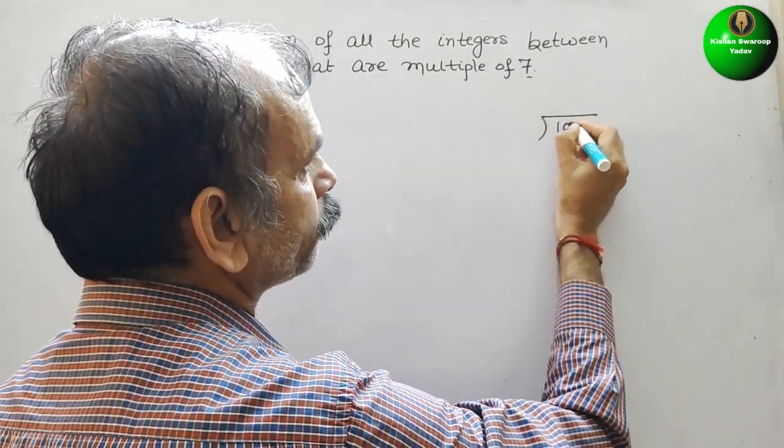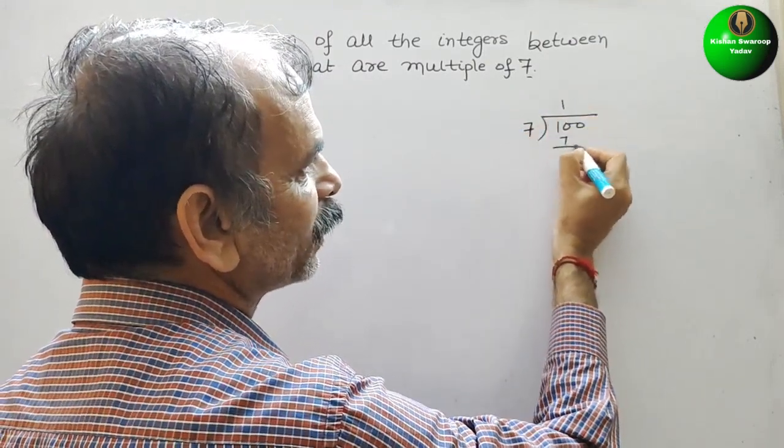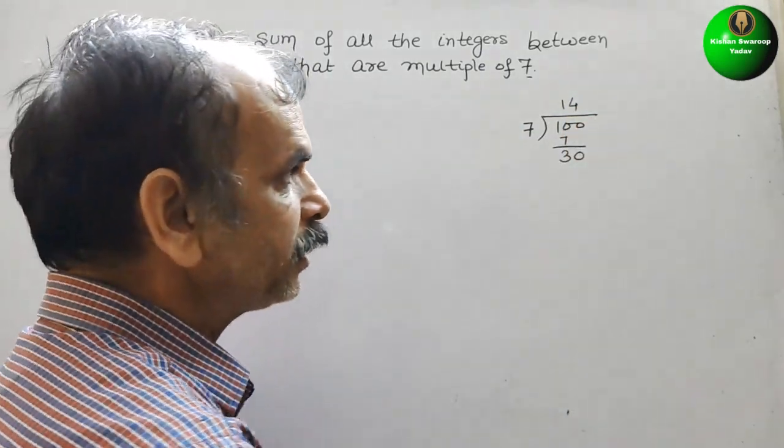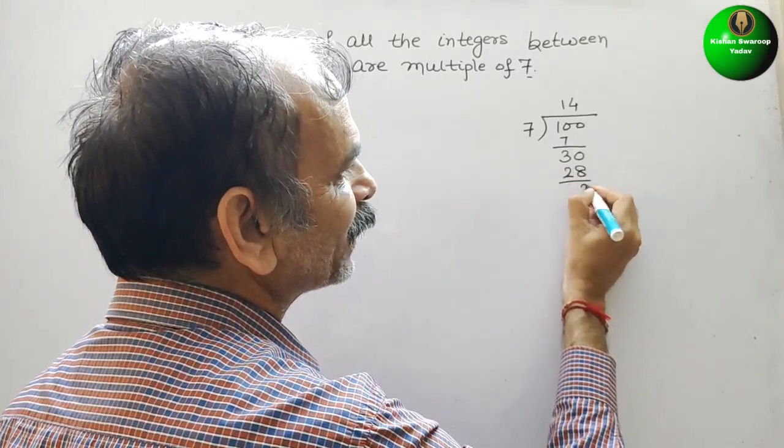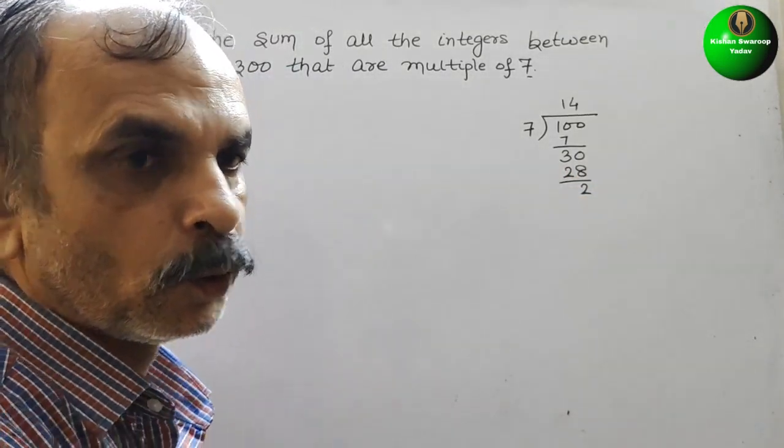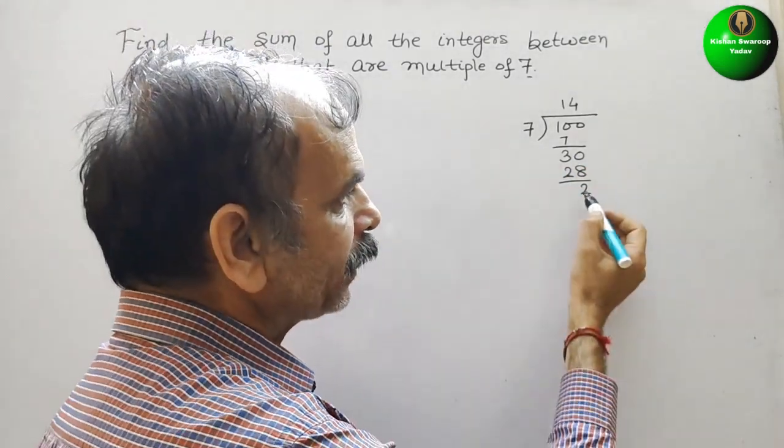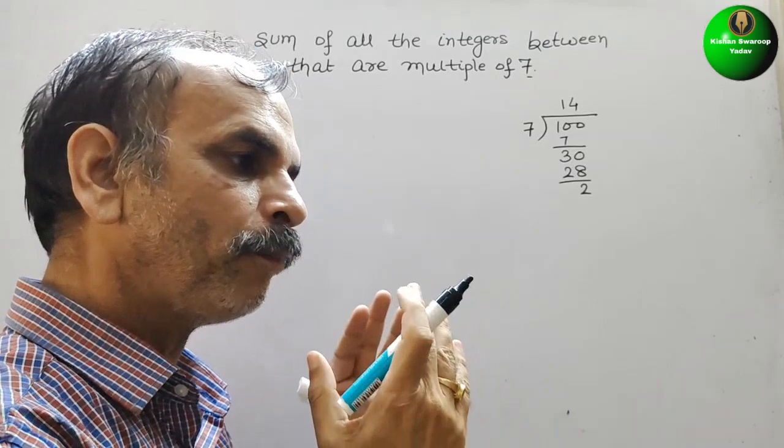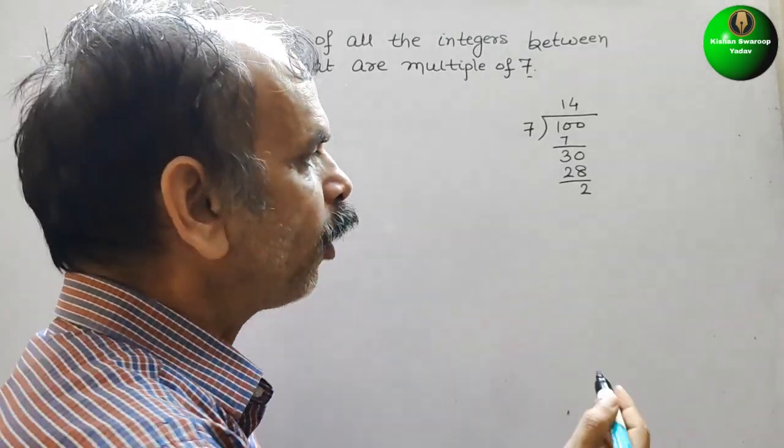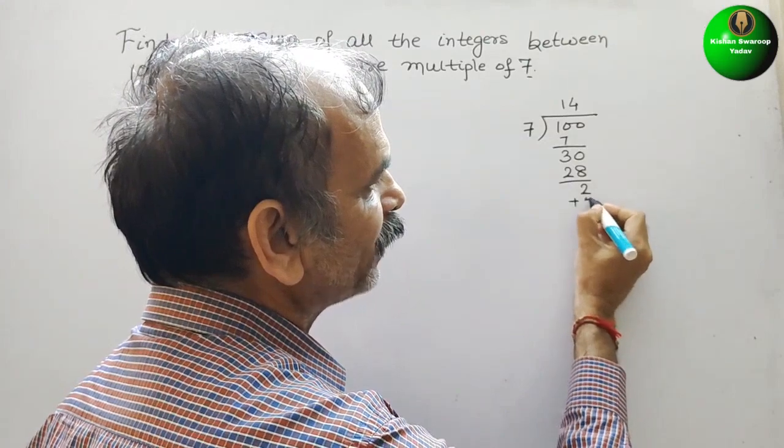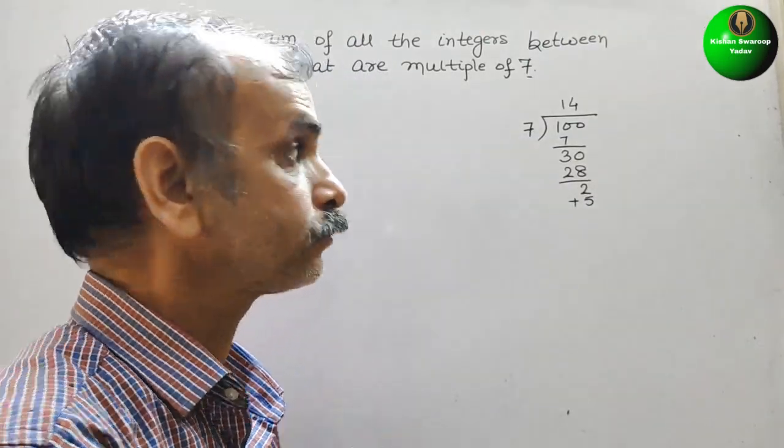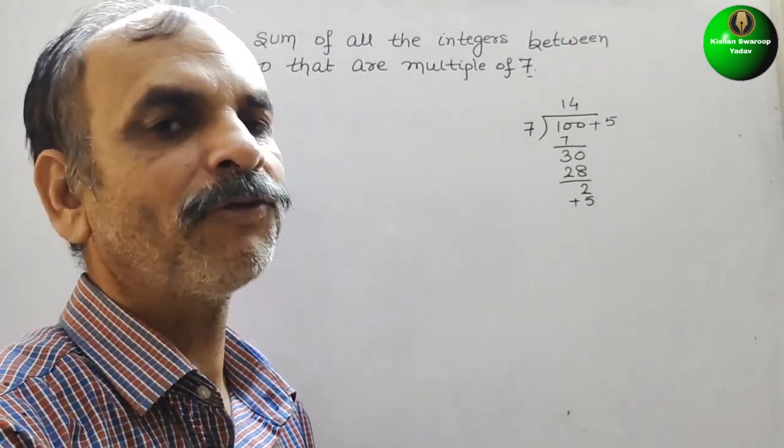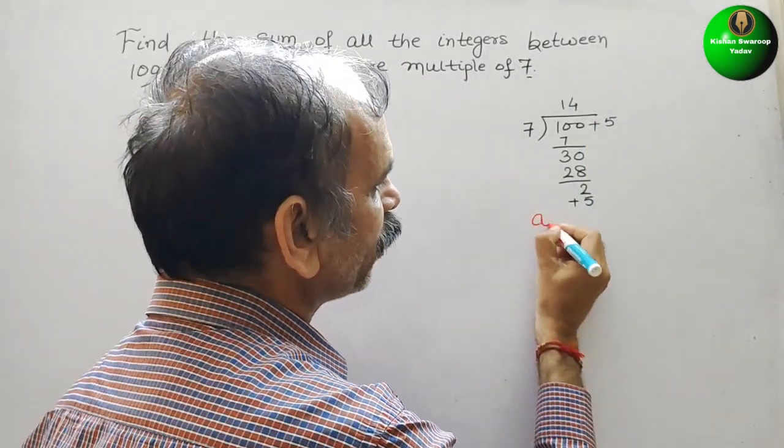100 by 7, so here it will come 17, so here it is 30, that means 4 times, 4 times is what 28, we will get the remainder 2. If you see this, so that means remainder if you subtract from 100, it will go below 100, but we need between that 100 and 300, so what we will do, just we will add 5 here, so we will get 7, that means here also we have to add 5. So first is your A, that is 105, so we will get A is equal to 105.